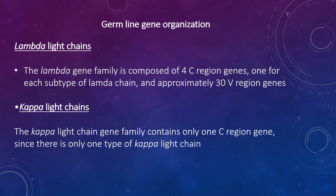The organization of kappa and lambda light chain genes in the germline of undifferentiated cells shows both lambda and kappa light chains. The lambda gene family is comprised of four C-region genes, one for each subtype of a lambda chain, and approximately 30 V-region genes. Each of the V-region genes is composed of two exons: one that codes for the leader region and the other that codes for most of the variable region.